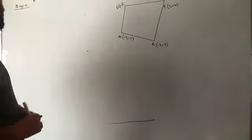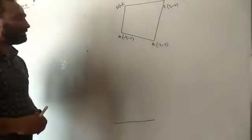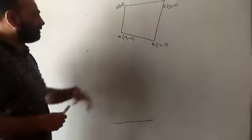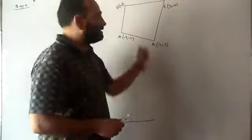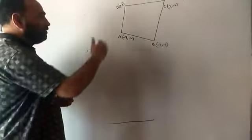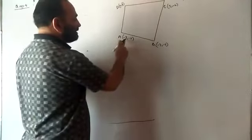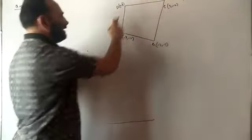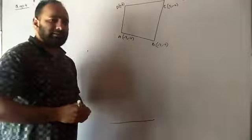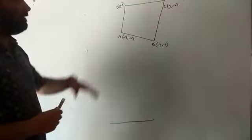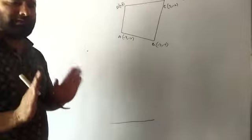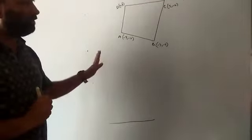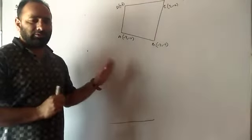Welcome back children, we are here with question number 4 of your exercise 7.3. The question is like this: we have been given a quadrilateral ABCD whose coordinates of the vertices are given. A has got (-4, -2), B (-3, -5), C (3, -2), and D (2, 3). We have to find the area of quadrilateral, but so far we only know the formula for the area of triangle. We don't know the formula for the area of quadrilateral, so how will we solve it?